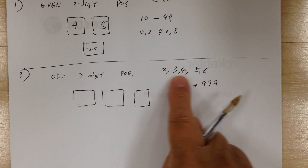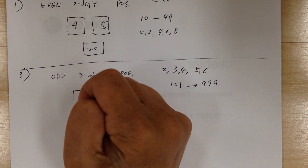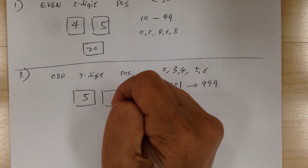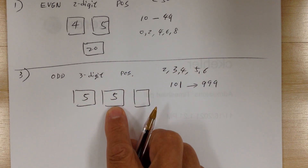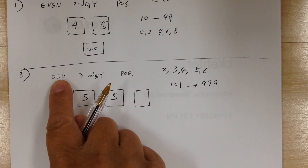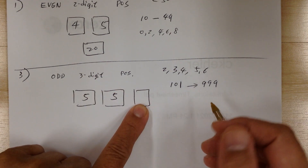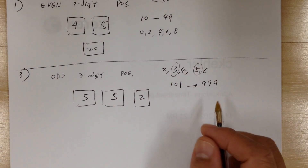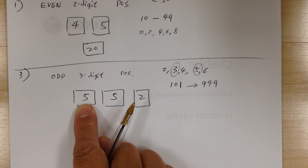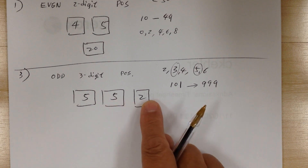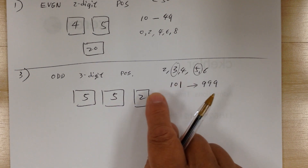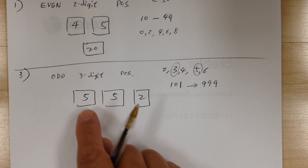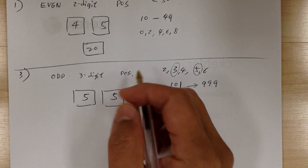You can only use those five digits, so the hundreds digit has five choices. The tens digit has no restriction, so again five choices. For the units digit, it has to be odd, so you can only use 3 or 5 — that's two choices. So you multiply: five times five times two gives you 50.